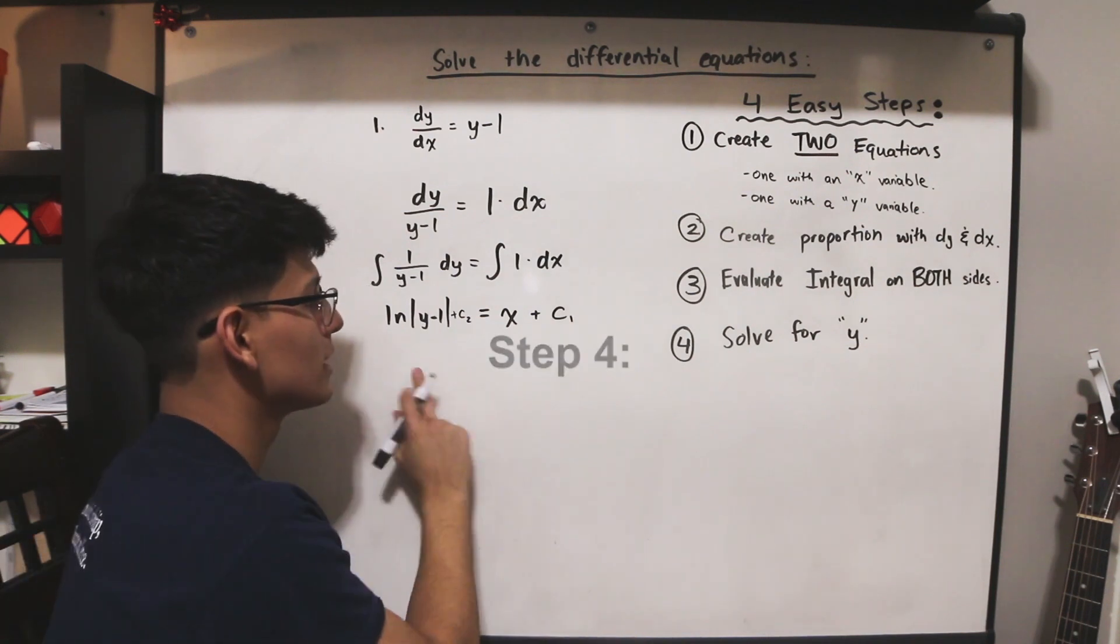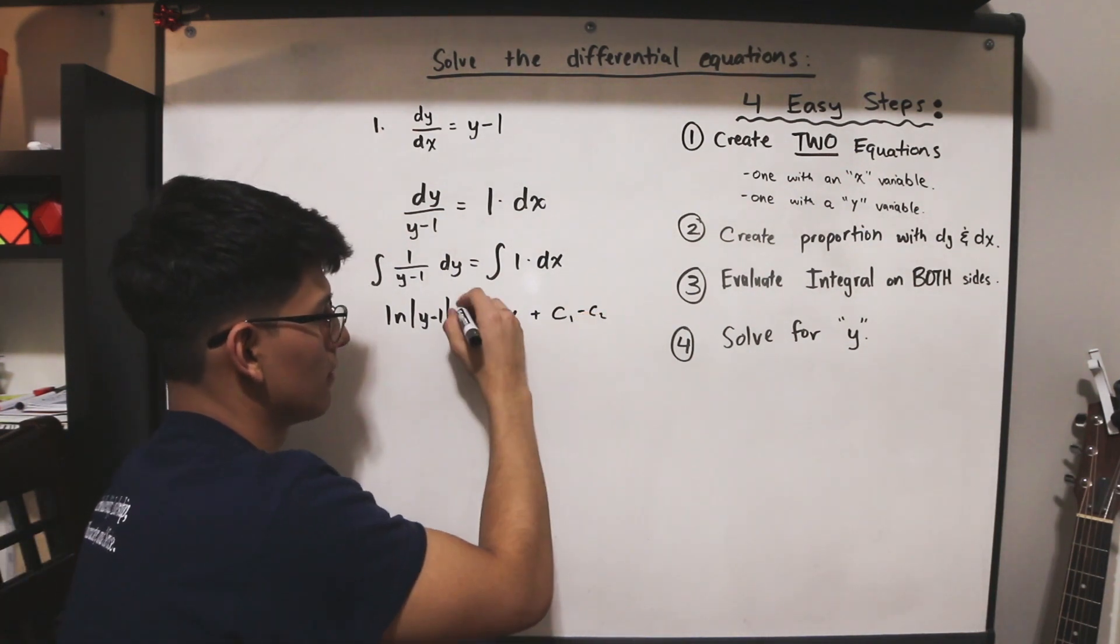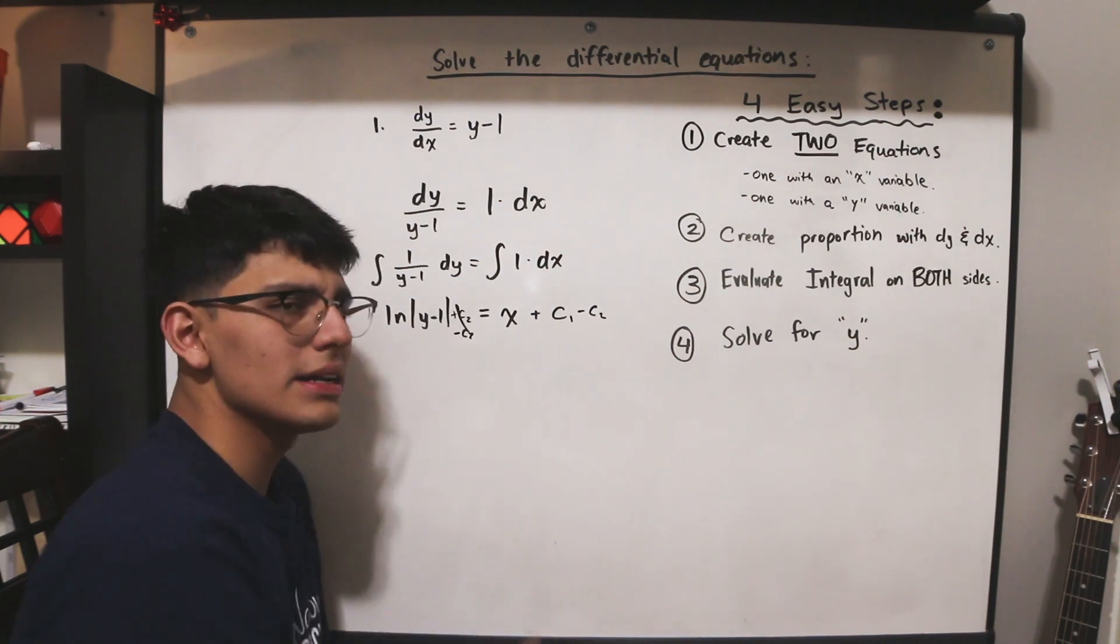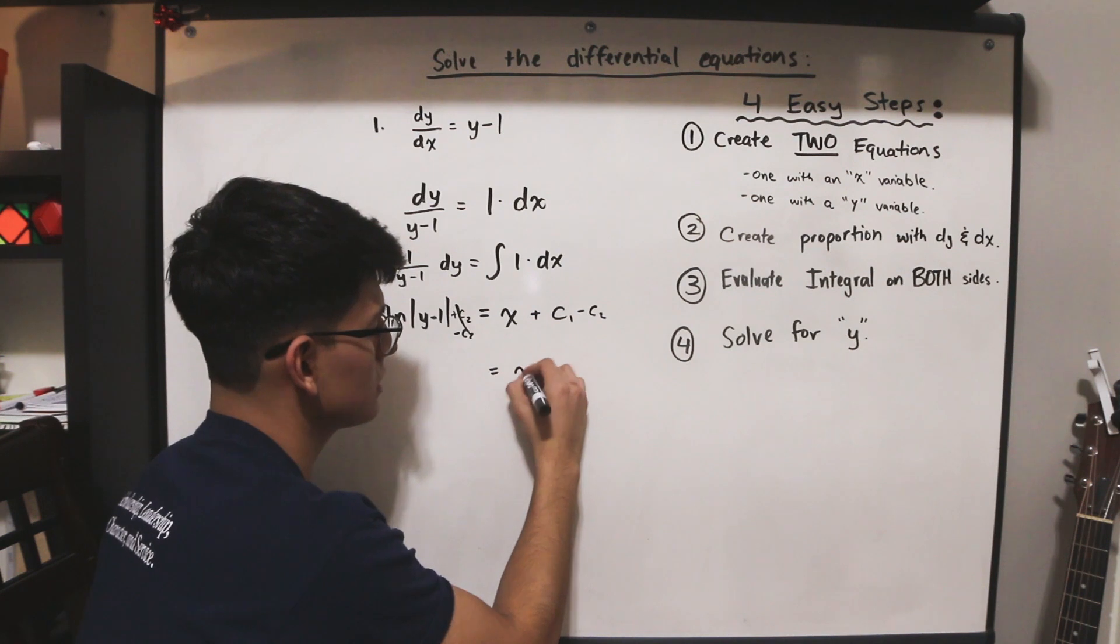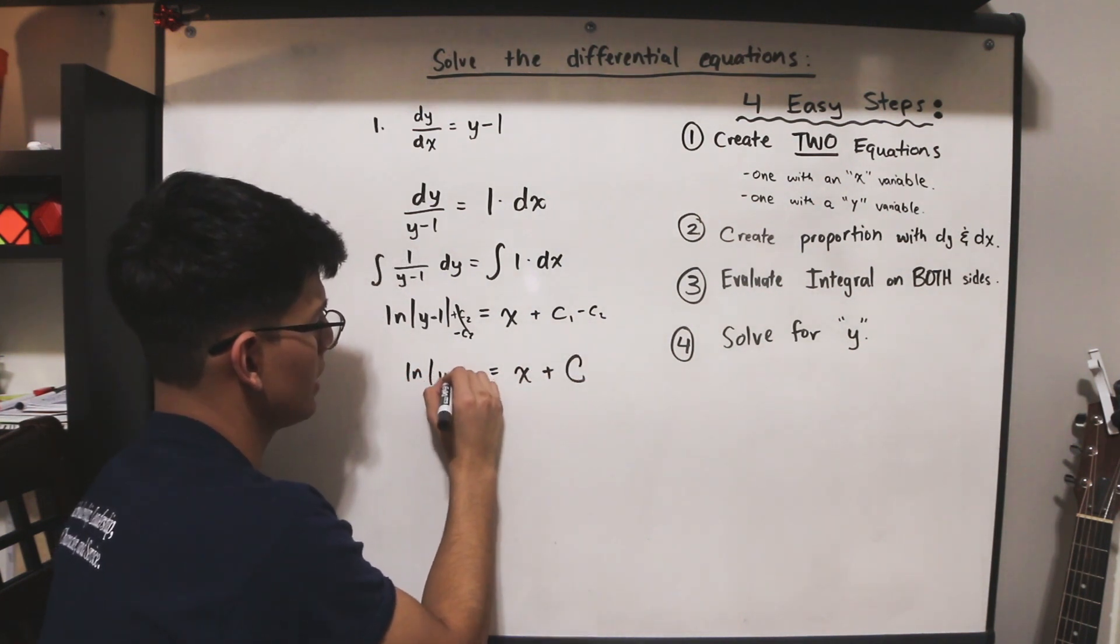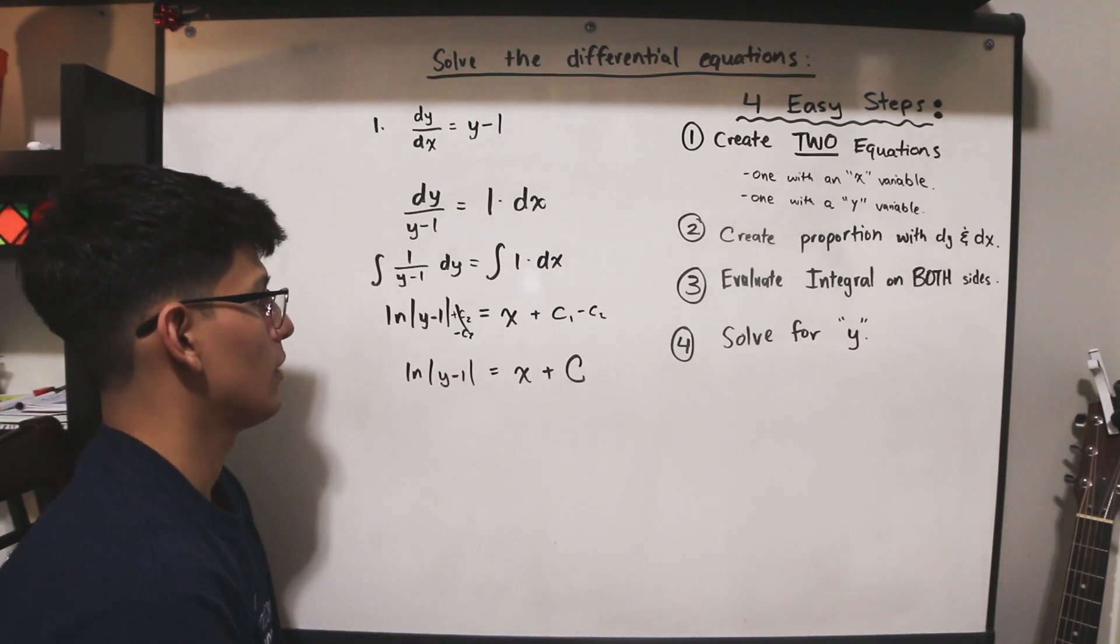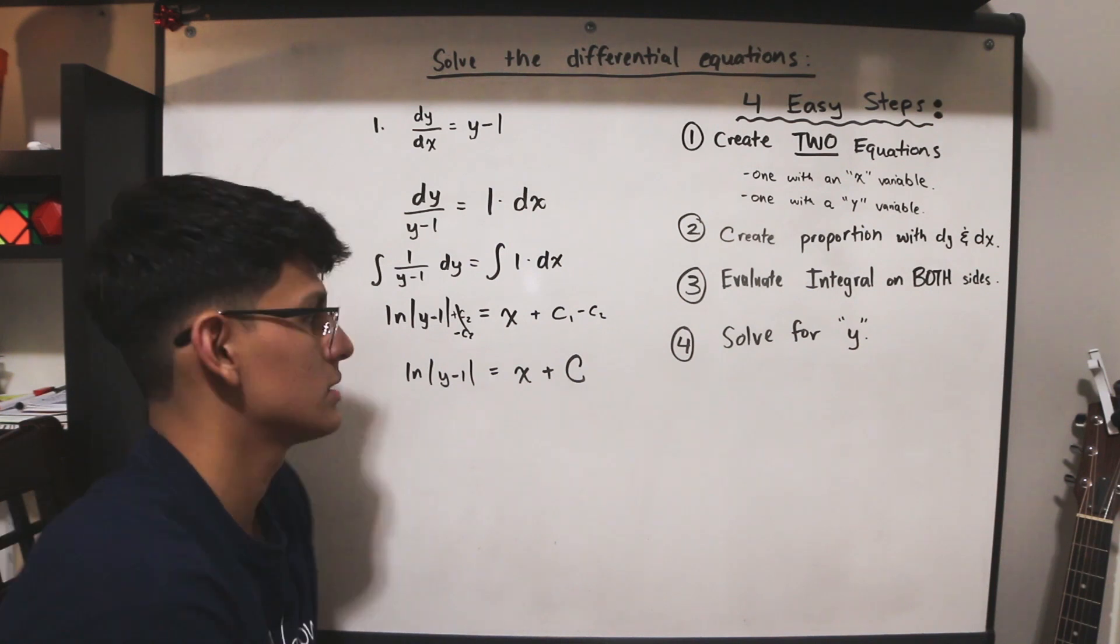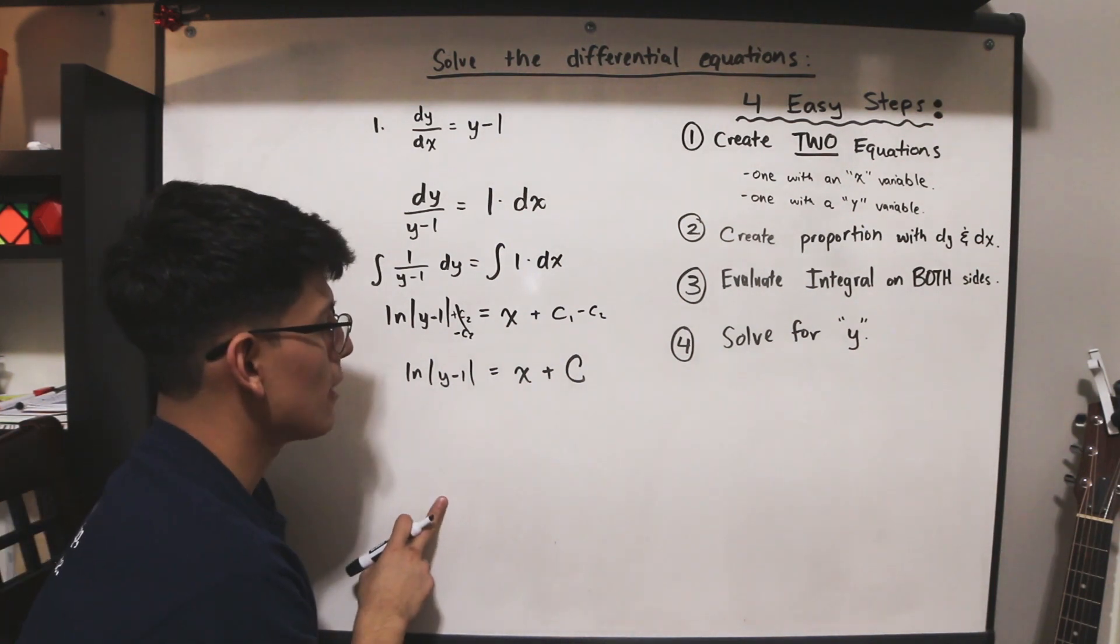Now we're going to solve for y. So we're going to subtract c2 on both sides. This cancels out. And c1 minus c2, well, they're both constants, so we can denote them as just one constant, x plus big C. And on the left side, we have ln y minus 1. And we write them as absolute value signs because they take into account the whole domain. Now, we have to solve for y.